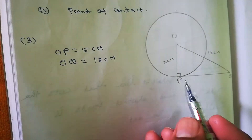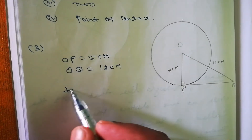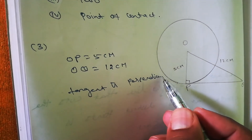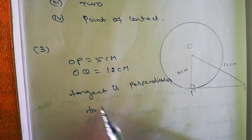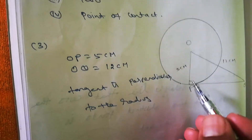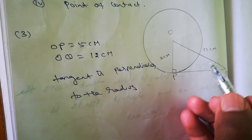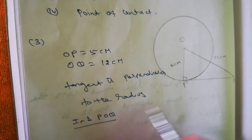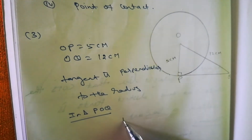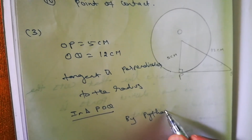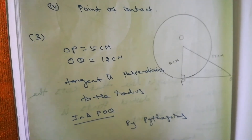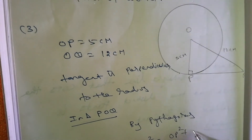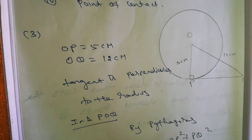Since the tangent is perpendicular to the radius, angle P equals 90 degrees. This means OQ is the hypotenuse. Therefore, in triangle POQ with angle P as a right angle, we apply the Pythagoras theorem: OQ² = OP² + PQ².